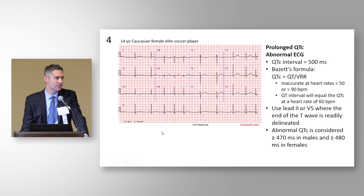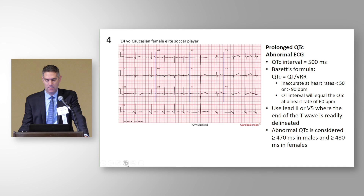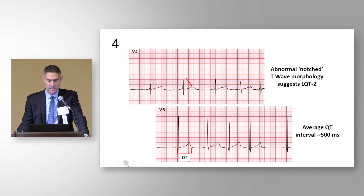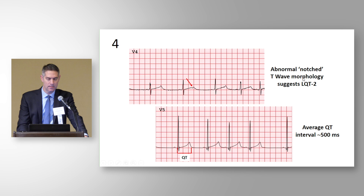This was also a good example of why we need to know which leads to look at — we need a very distinct end to the T wave to calculate accurately. Our cutoffs for flagging a prolonged QTc are 470 milliseconds in males and more than 480 milliseconds in females. Looking at V4 in a blown-up view of the same ECG, the notched T wave morphology is suspicious for and can be compatible with Long QT Type 2.